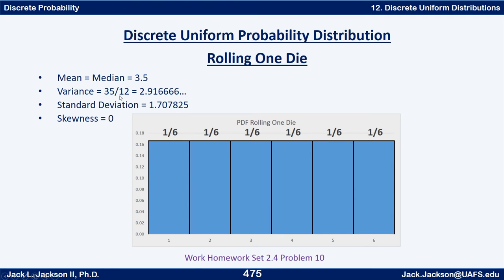The variance is 35/12, or about 2.916 repeating. The standard deviation is approximately 1.707825. It has zero skewness — it's completely symmetric. That's an example of a discrete uniform distribution.